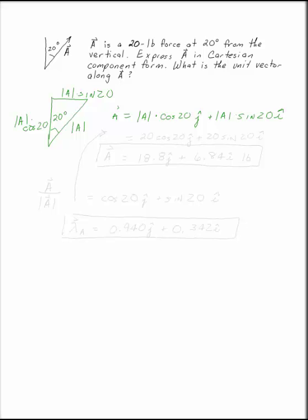The magnitude of A is 20, so that's 20 cosine 20 J, plus 20 sine 20 I. So A is 18.8 J plus 6.84 I in pounds.